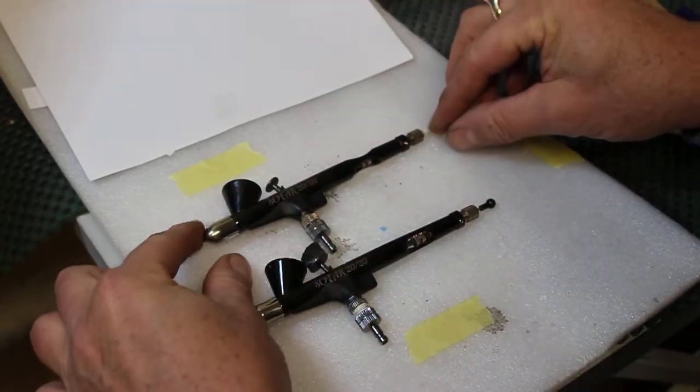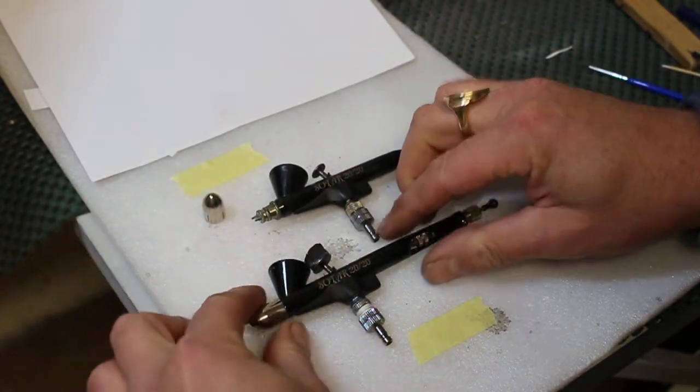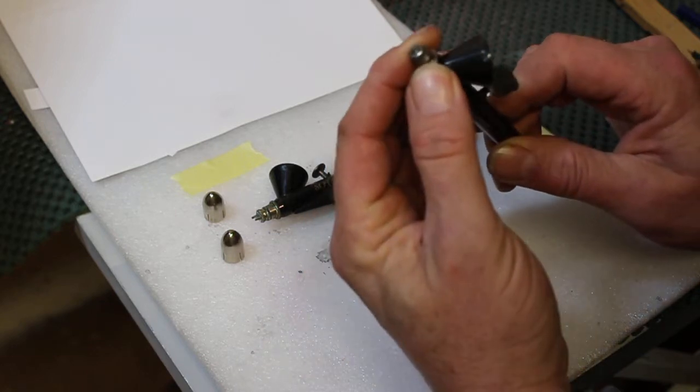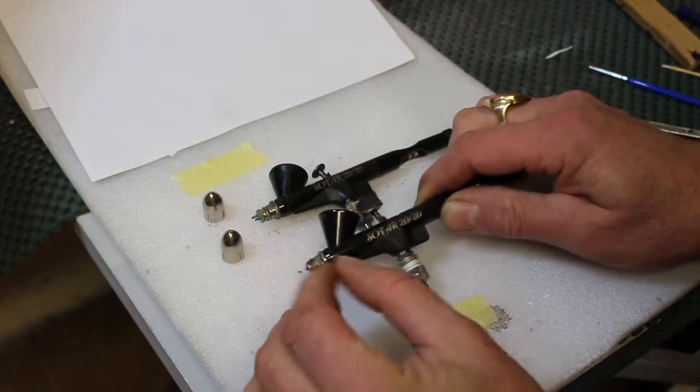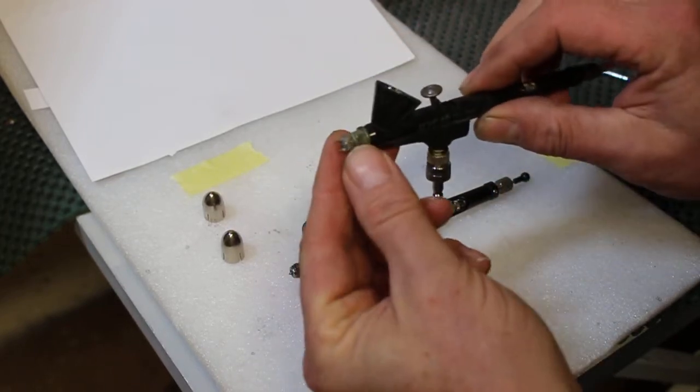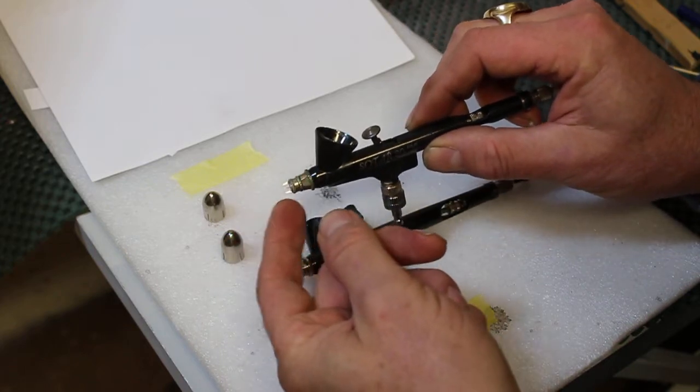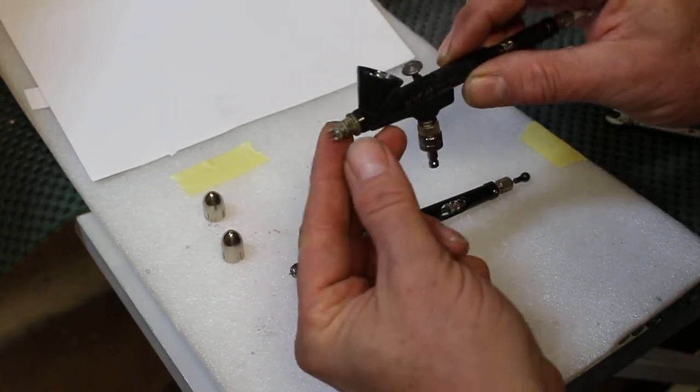Apart from the white, the difference on the end of these, if I just take those off, is this one, if you can see, is just the nozzle cap on the end. And then this one here has the two prongs on it, and these two prongs just protect that needle if you're using it. You won't be able to bash the needle off anything.